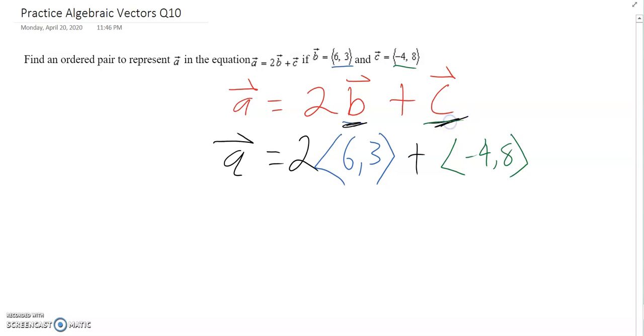Here we just need to distribute the 2. When you multiply a vector it applies to the X and Y components, so 2 times 6 is 12 and 6. And now that we just have ordered pairs, we can add, add the X's, add the Y's.